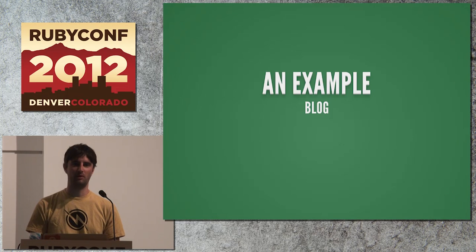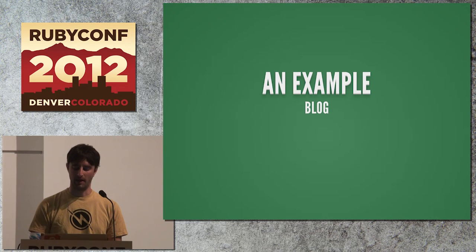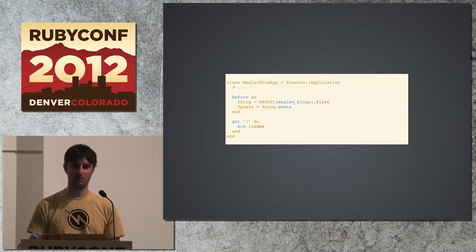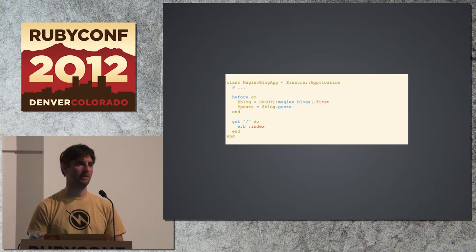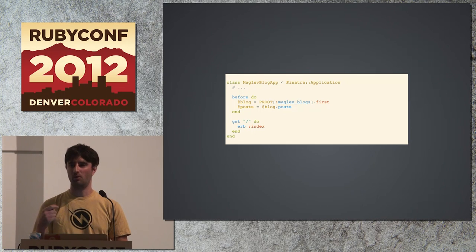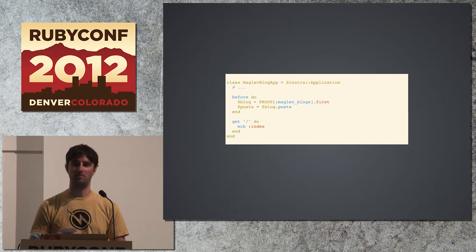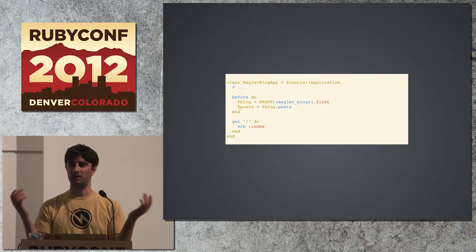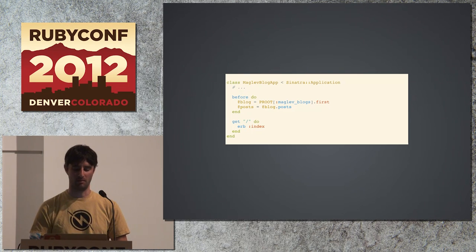We'll run through another quick example — the typical blog example in the Rails world. What was really fun about this simple Sinatra app is that I was just dealing with classes. I didn't have any migrations. I didn't have to set up SQLite or Postgres. There were no dependencies, no drivers. As long as Maglev installs, you will be able to persist your objects.